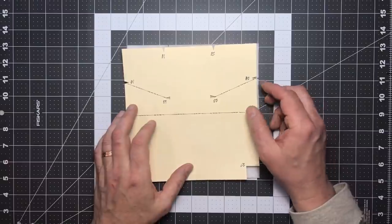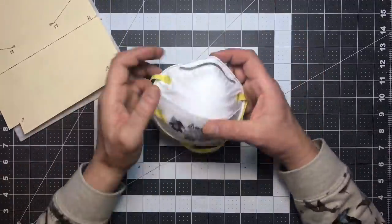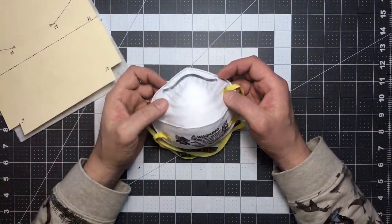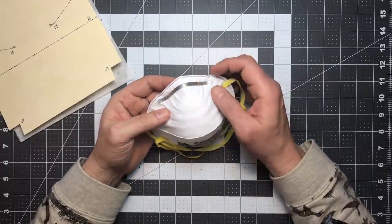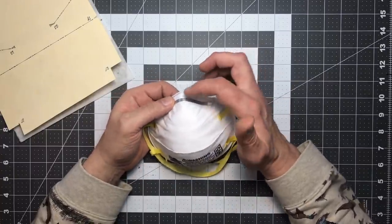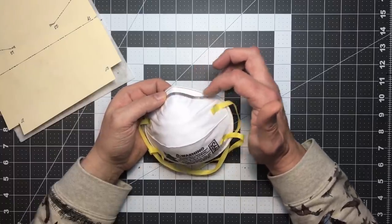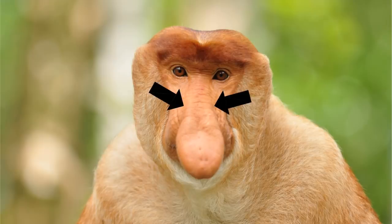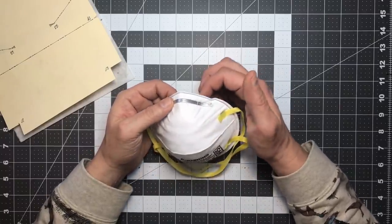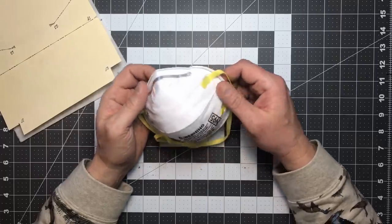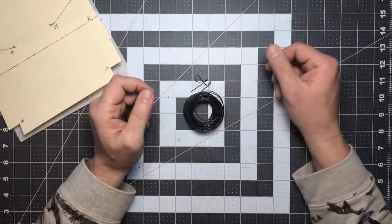Now before we get into the last couple of steps of folding everything up and stapling it together, let's go back and take another look at this N95 mask. This mask has a pliable metal strip across the top here. And the purpose of that strip is to allow the mask to conform to that hollow between your nose and your cheek. Without that little piece of metal pushing the filter down, you'd end up with a gap back here and the mask wouldn't seal up very well. So we can do the same thing on our mask with a little bit of wire.